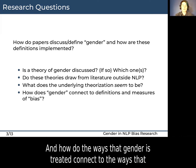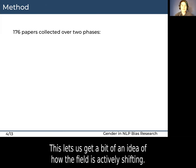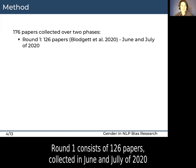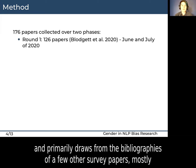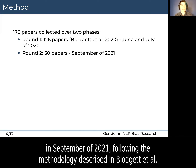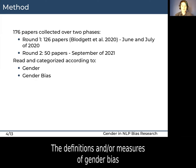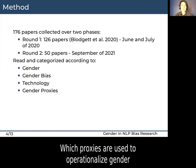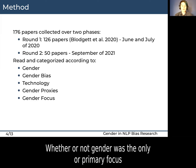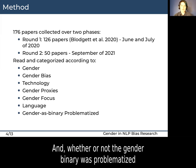And how do the ways that gender is treated connect to the ways that bias is defined and measured? To answer these questions, we collected 176 papers over two phases, which lets us get a bit of an idea of how the field is actively shifting. Round one consists of 126 papers collected in June and July of 2020, primarily drawing from the bibliographies of a few other survey papers, mostly Blodgett et al. Round two consists of 50 papers randomly sampled from 85 papers collected in September of 2021, following the methodology described in Blodgett et al. We read all of these papers and categorize them according to: the way that gender is theorized, the definitions and/or measures of gender bias, the technology of interest, which proxies are used to operationalize gender, whether or not gender was the only or primary focus, the language or languages investigated, and whether or not gender as a binary was problematized.